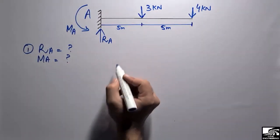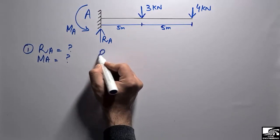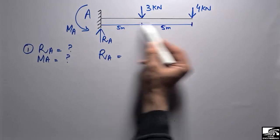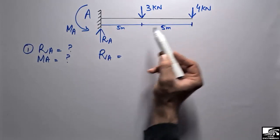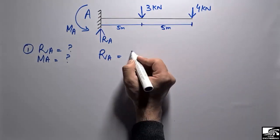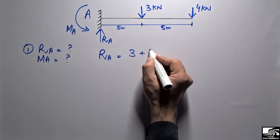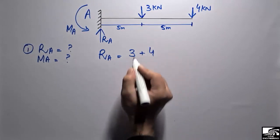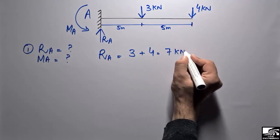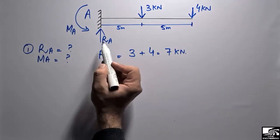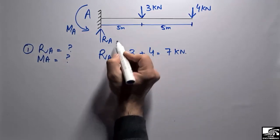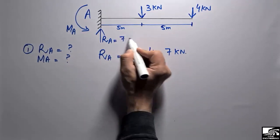To find the reaction RA, it is equal to all the loads acting on the beam. There are two loads: one is 3 kilonewtons and one is 4 kilonewtons. So it is simply the addition of the two loads: 3 plus 4 equals 7 kilonewtons. So RA is equal to 7 kilonewtons.